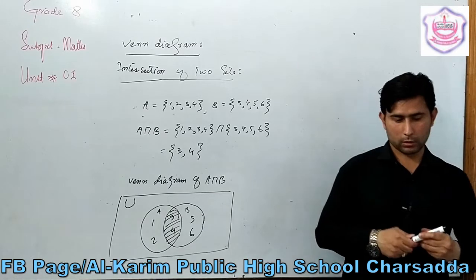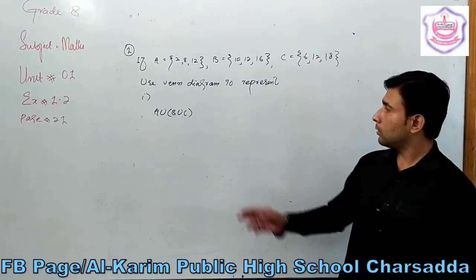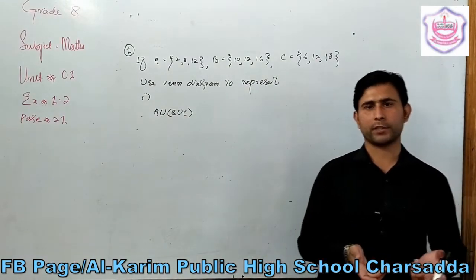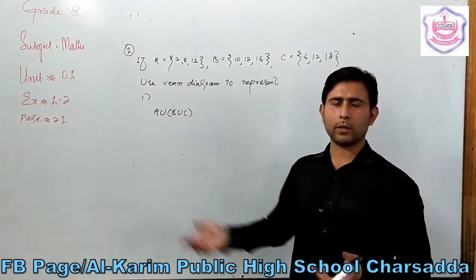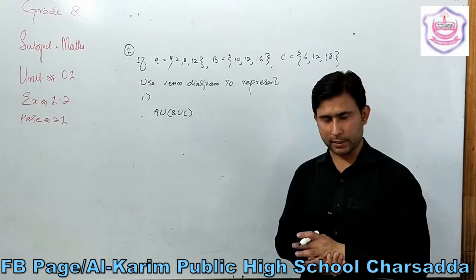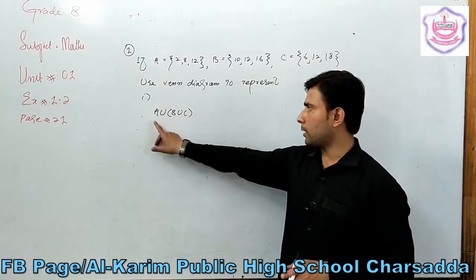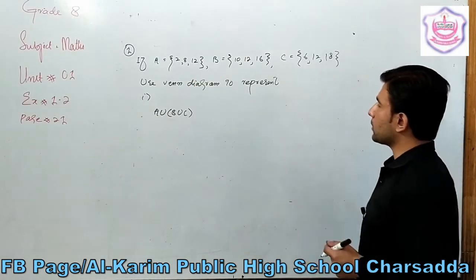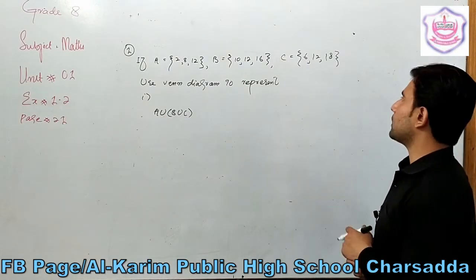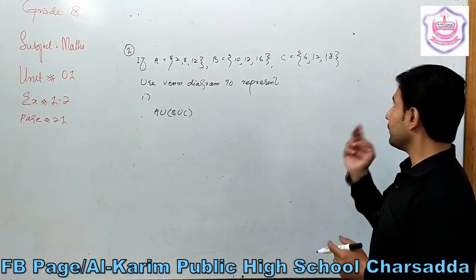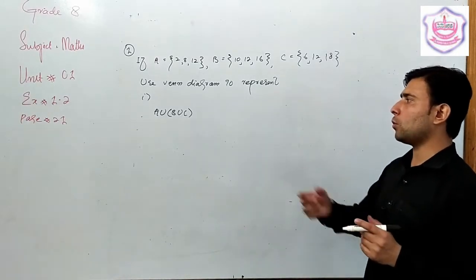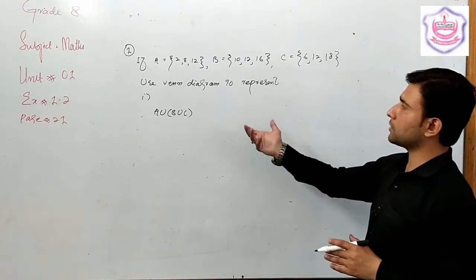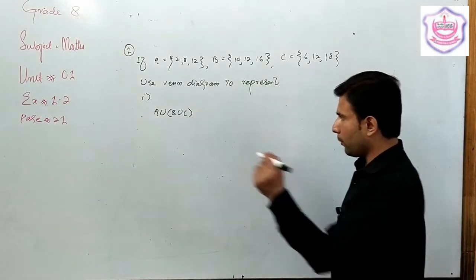Now we start Exercise 1.2, moving from two sets to three sets. We will discuss the union of three sets and the intersection of three sets. In question number one, three sets are given: set A = {2, 8, 12}, set B = {10, 12, 16}, and set C = {6, 12, 18}. We will represent these three sets and perform shading.